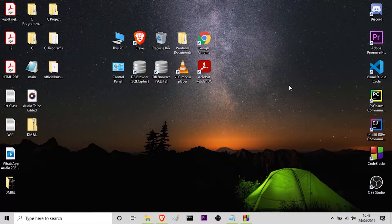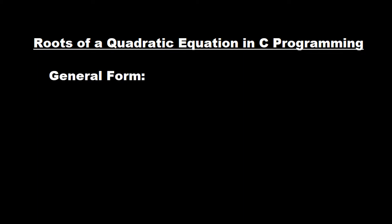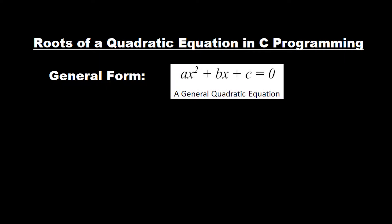Today I will be showing you how to find the roots of a quadratic equation with the help of a C program. A general form of a quadratic equation is like this: ax squared plus bx plus c is equal to 0, where a, b, and c are the coefficients.